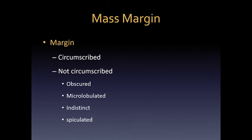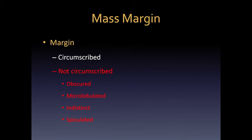The margins are the next feature we look at for masses. The easiest way to think about it is: are the margins circumscribed and well-delineated, where you can draw a nice line around it clearly, or not circumscribed? If not circumscribed, we subdivide into whether it's obscured, microlobulated, indistinct, or spiculated. A circumscribed margin is a benign feature typically associated with benign lesions such as a fibroadenoma or a cyst, whereas not circumscribed is more likely associated with malignant lesions.